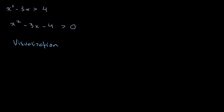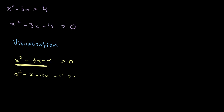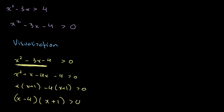So let's get to solving it. We have our equation x squared minus 3x minus 4 is greater than 0. We can factorize this — we're going to find the roots. 4 can be split as 4 and 1, so x squared plus x minus 4x minus 4 is greater than 0, giving us x times (x plus 1) minus 4 times (x plus 1) is greater than 0, which factors to (x minus 4)(x plus 1) is greater than 0.